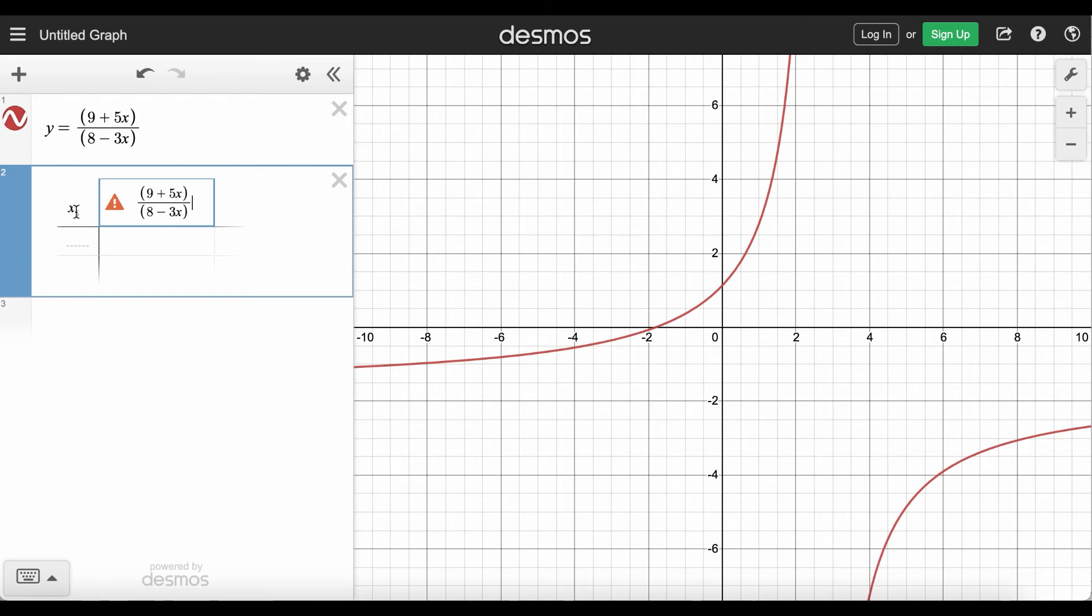Again, since our input variable has a subscript of 1, we need a subscript of 1 here. So I click to the right of it and just type a 1. Click the right of this x and just type a 1.